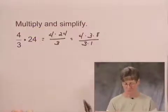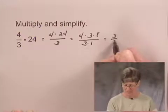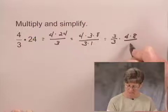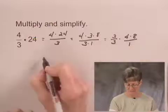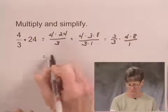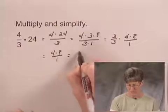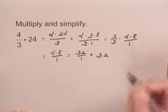There's a factor of 3 in both the numerator and the denominator. So I can write this as 3/3 times 4 times 8 over 1. 3/3 is equal to 1. So this product is equal to 4 times 8 over 1, which is 32/1, or just 32.